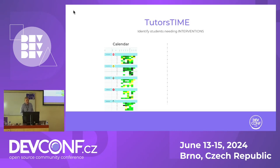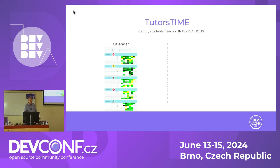That brings us to tutors time, which allows us to identify students needing interventions. You can see the calendar, inspired by GitHub — every week of the course, every day, and how much time students are spending. Students can hide this if they want, but we run an open philosophy. If engagement is light, you might want to intervene — say, you know, get going. That's just a Slack message; it's really simple.